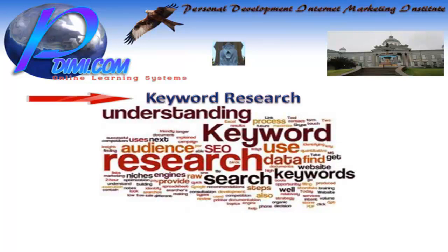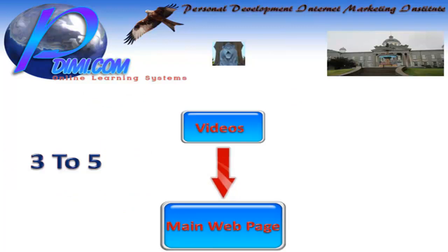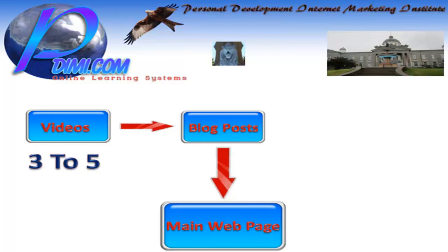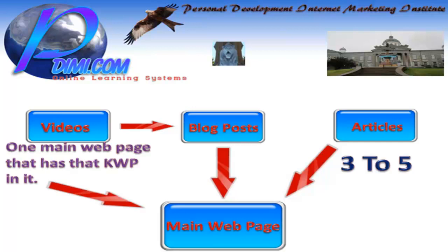Stick to that schedule and Google will stick by you. SEO video tip number nine: always start out with your keyword research. The purpose of this keyword research is to come up with one main webpage that has the keyword phrase in it. Once you've accomplished this, you do three to five videos and you point these videos right back to your one main webpage. After that, you do three to five blog posts and you point these blog posts right back to your main webpage. Then you do three to five more videos and you point them at your blog posts. If you want to take this one step further and guarantee your page one ranking, you write three to five articles.